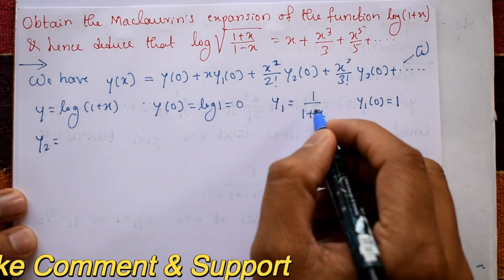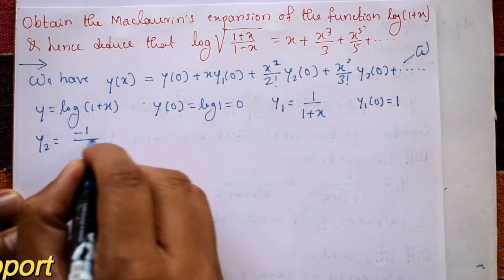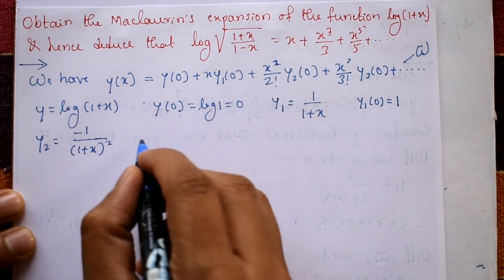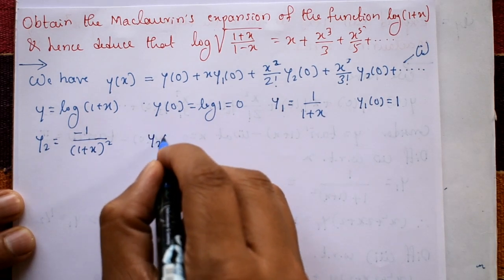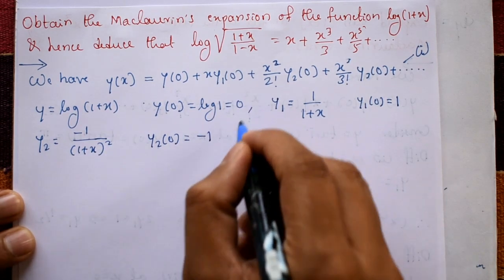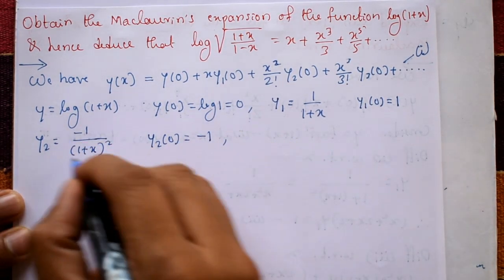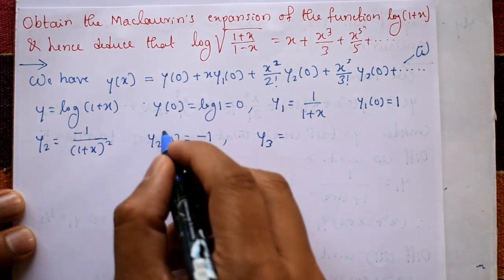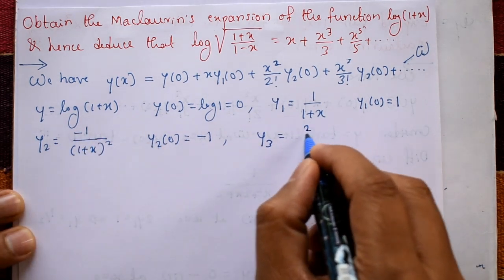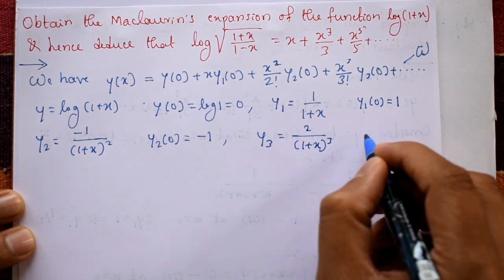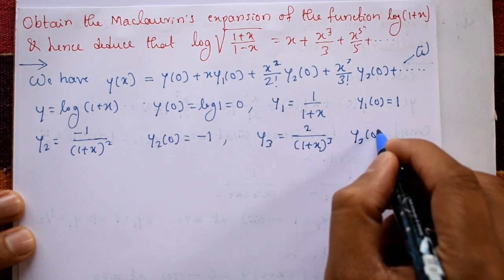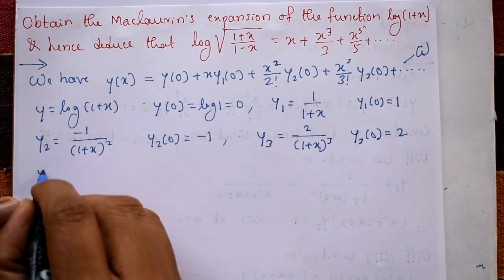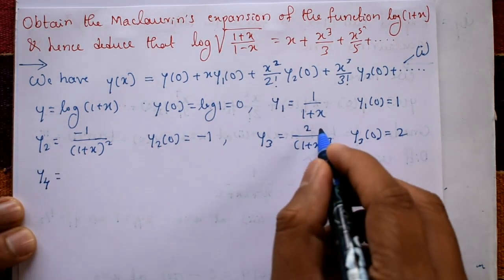Differentiate again: y₂ = −1/(1+x)². Put x = 0: y₂(0) = −1. Differentiate again: y₃ = 2/(1+x)³. Put x = 0: y₃(0) = 2.